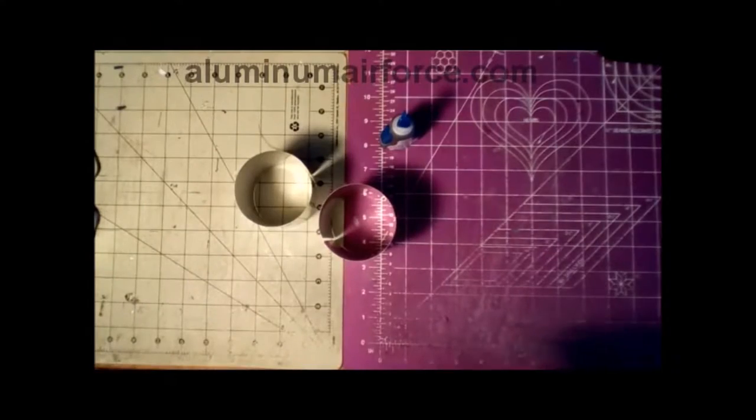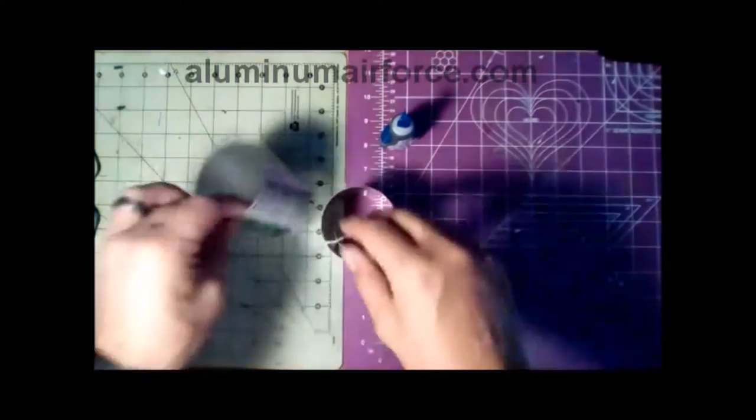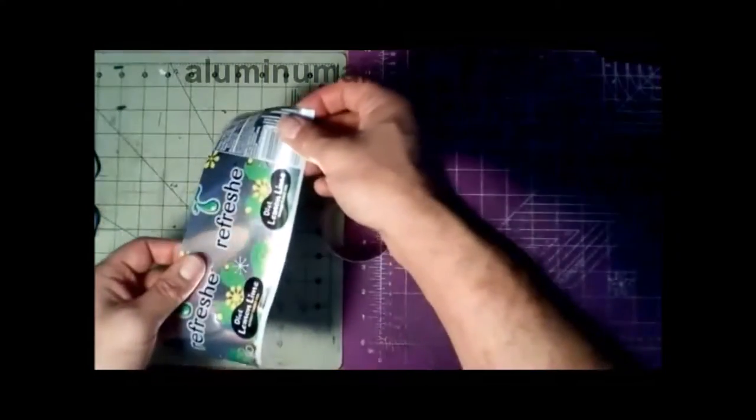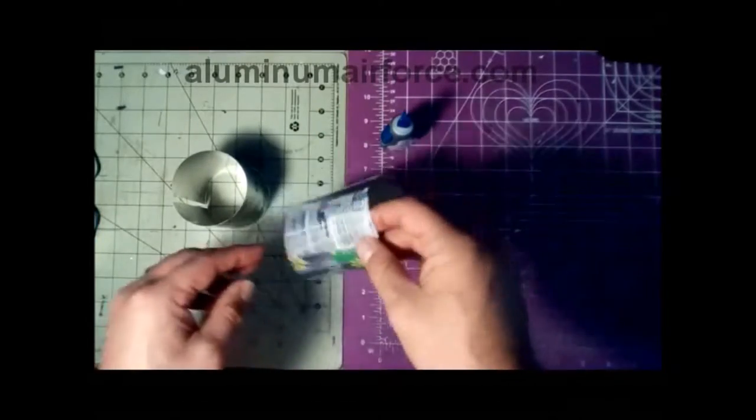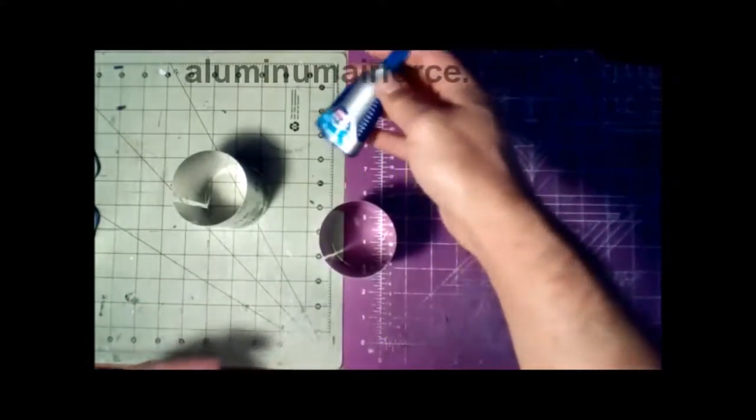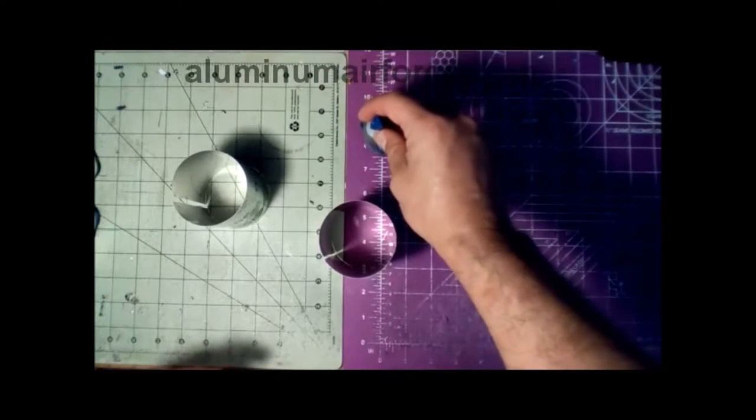In this tutorial we're going to make a can panel of two cans using a couple of refresh cans here. The purpose of this is to extend our can surface for larger pieces. We're going to use our trusty super glue here, I use Loctite.